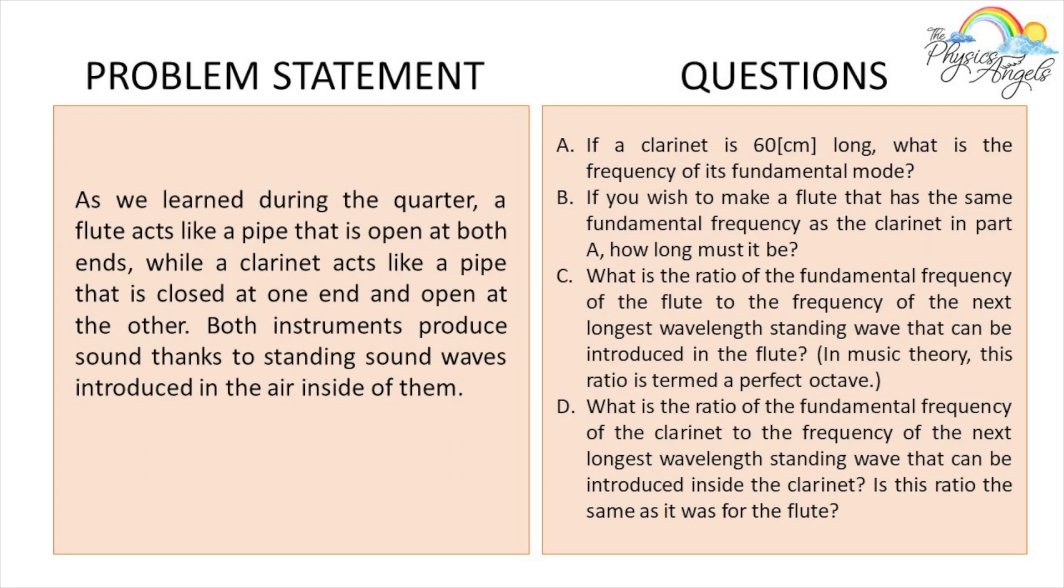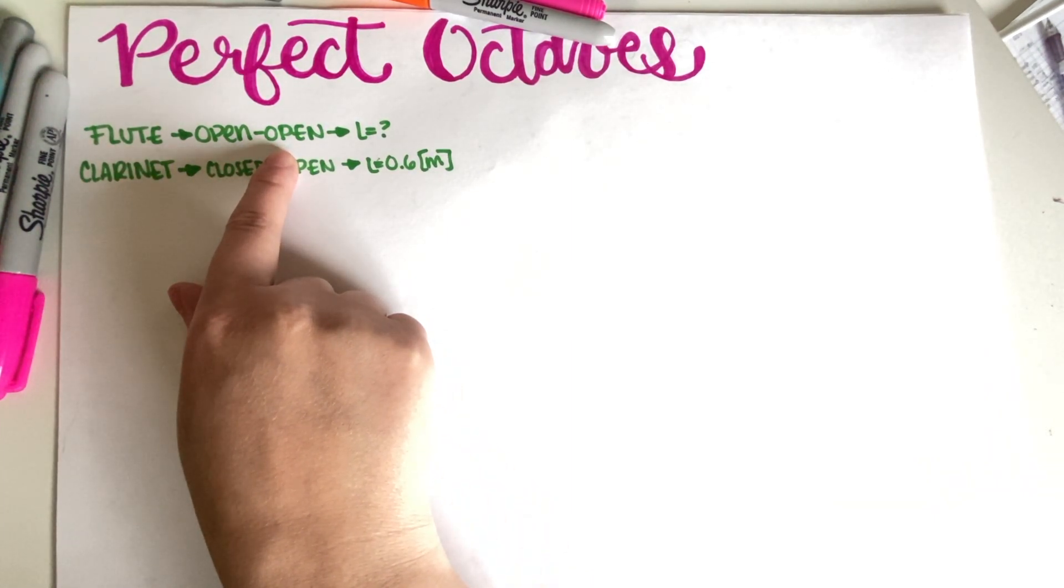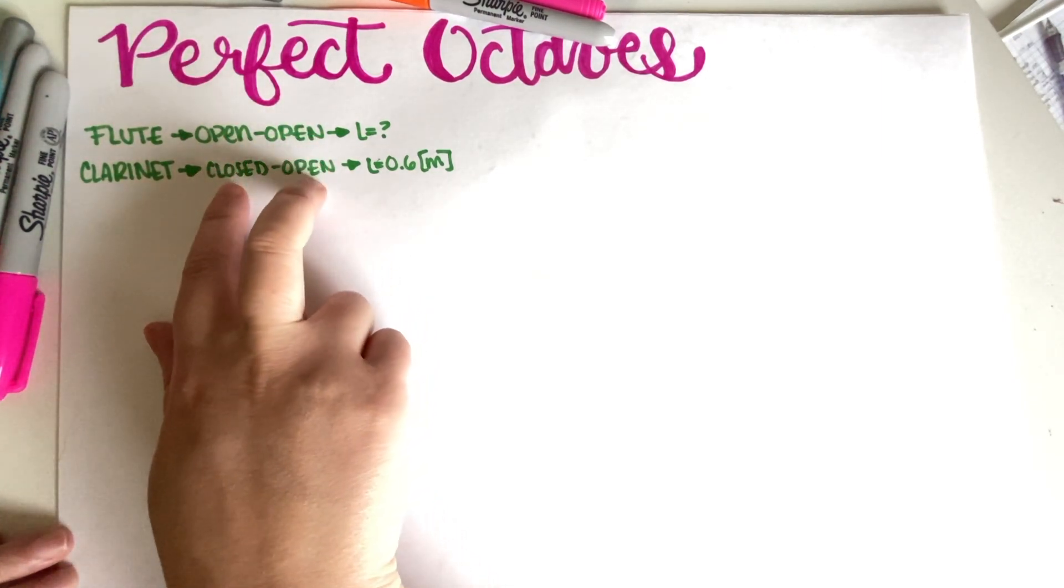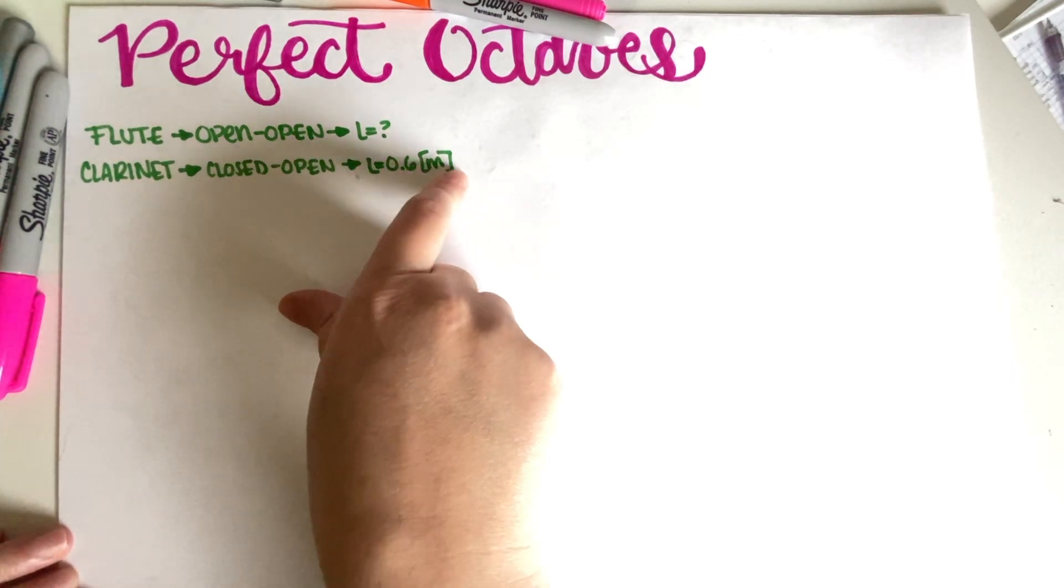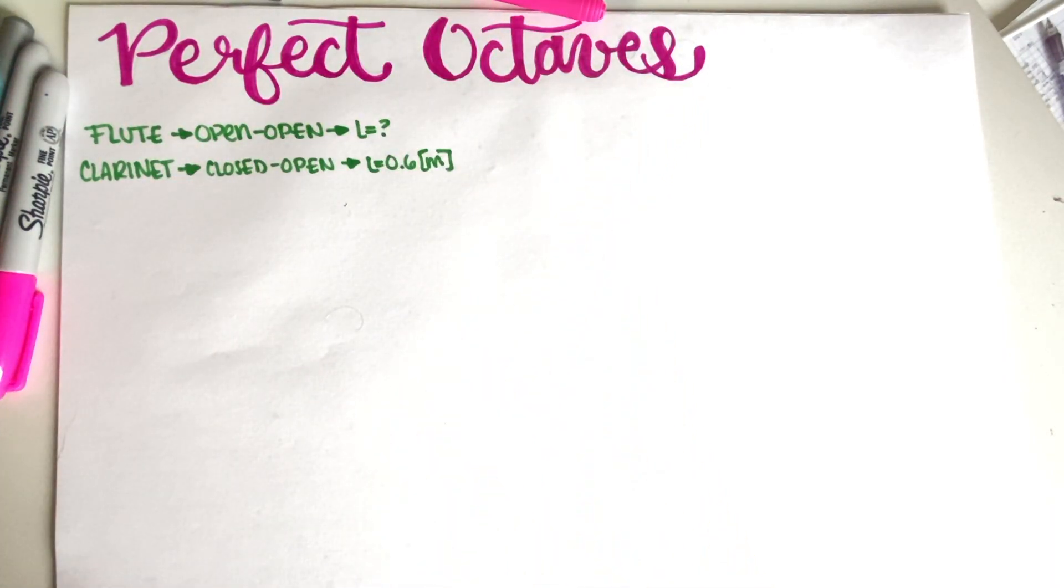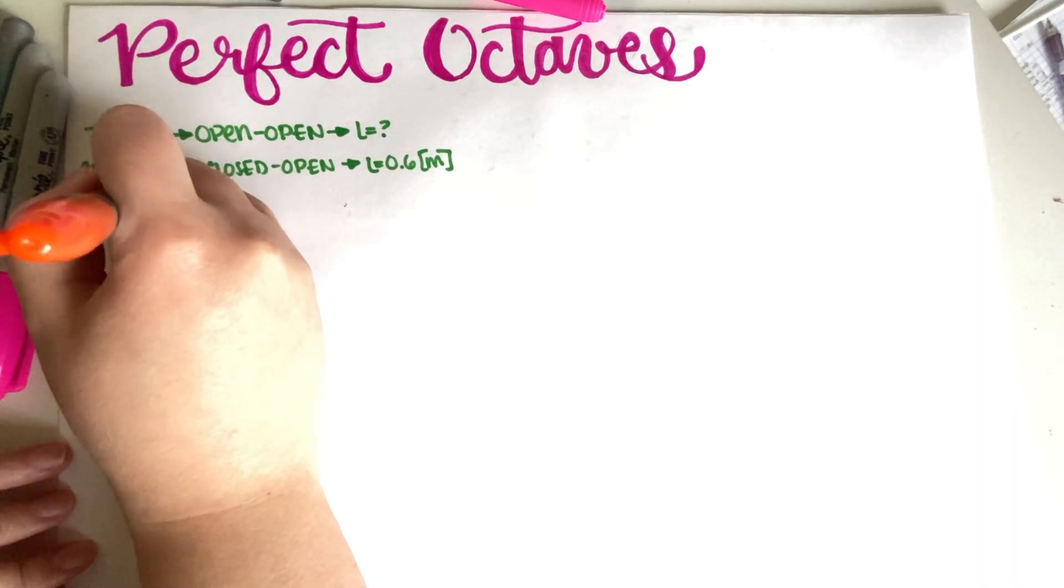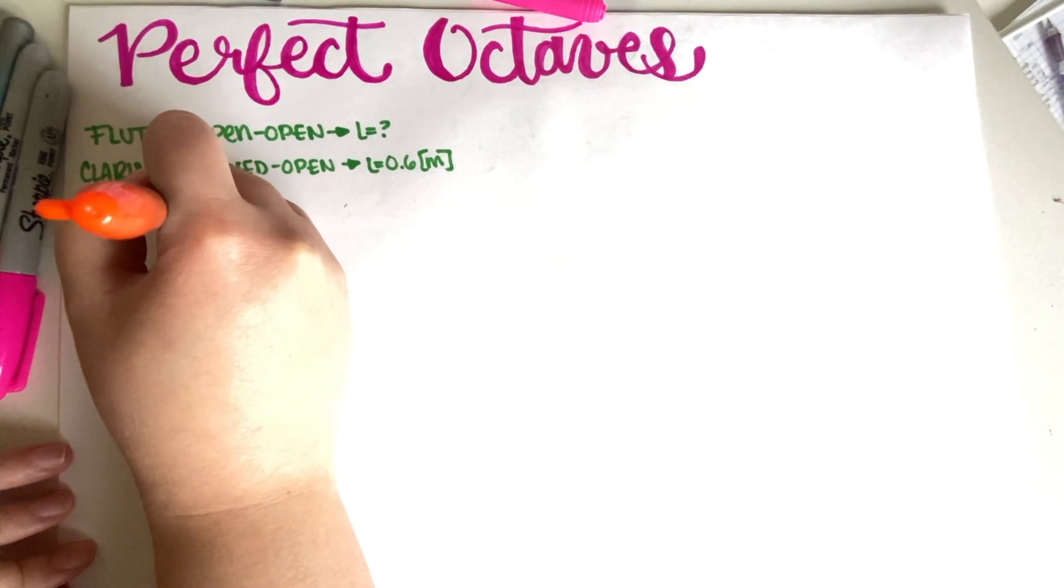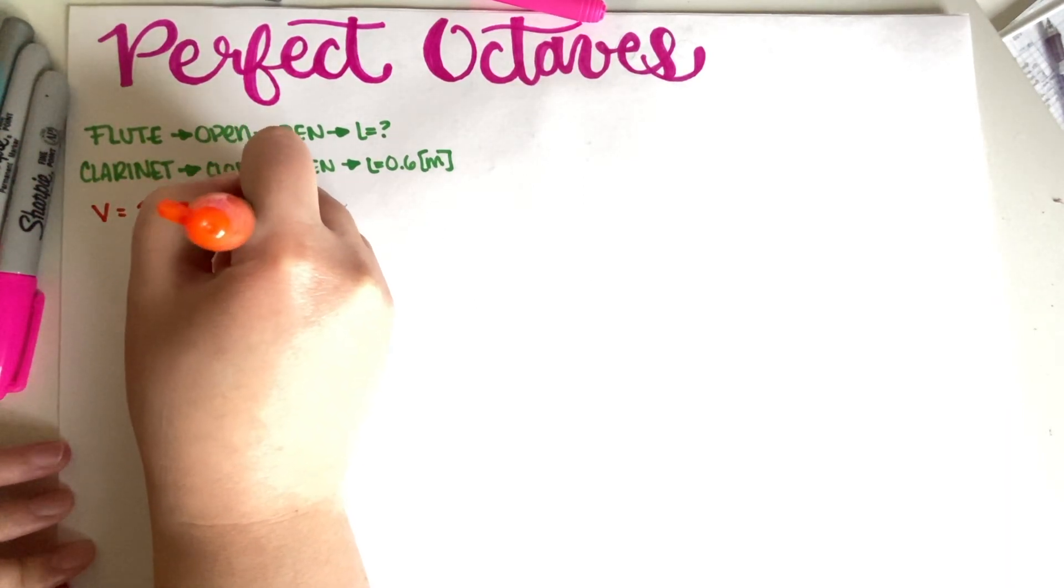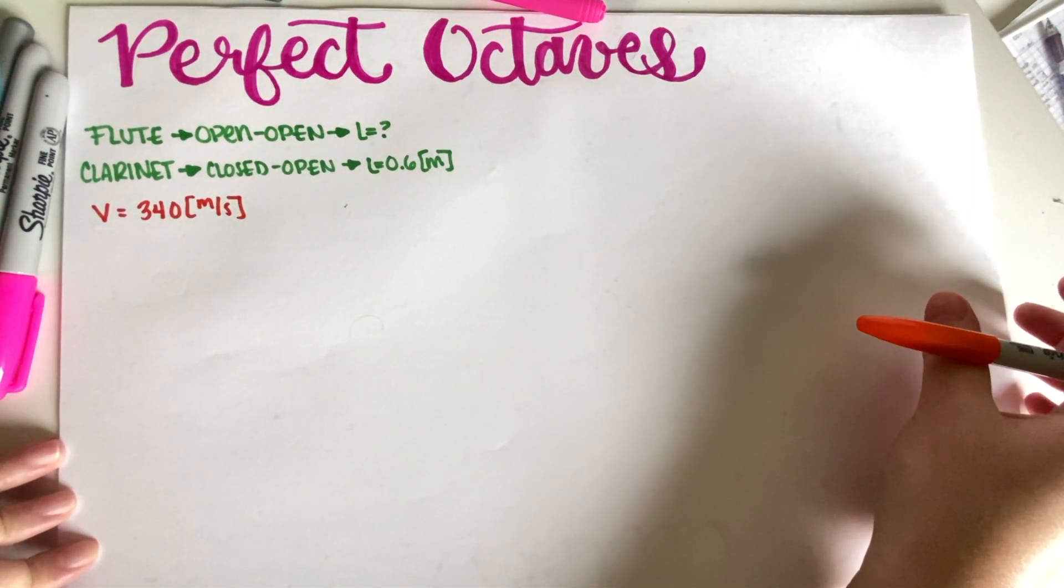The first thing that they are asking us to do—feel free to pause the video to copy all the instructions—is if a clarinet is 60 centimeters long, what is the frequency of its fundamental mode? As you can see, I have my very basic information over here: flute is open-open ended, clarinet is closed-open ended. They gave us the length of the clarinet but not the length of the flute. This quiz does provide us with the velocity of waves in air, so 340 meters per second. This was provided on the final exam and it's the speed of sound standing waves in air.